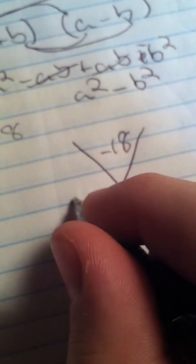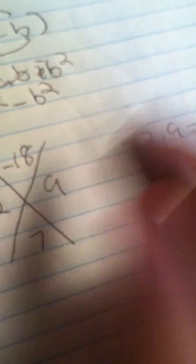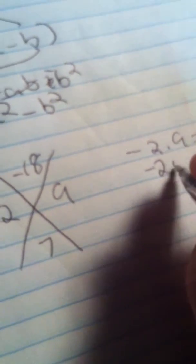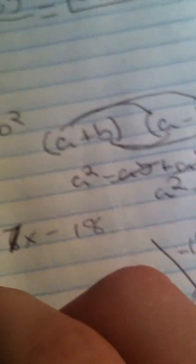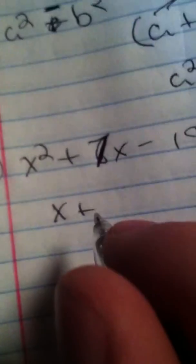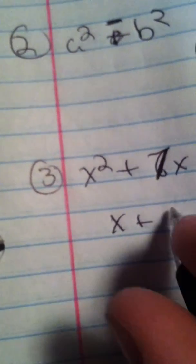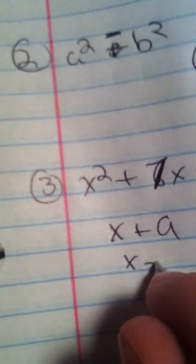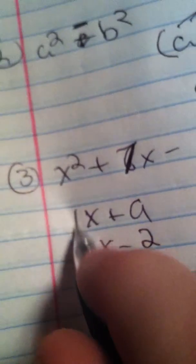Then you find something that multiplies to -18 and adds up to 7. So I would do -2 and 9, because -2 times 9 equals -18 and -2 plus 9 equals 7. So your answer would be (x + 9)(x - 2).